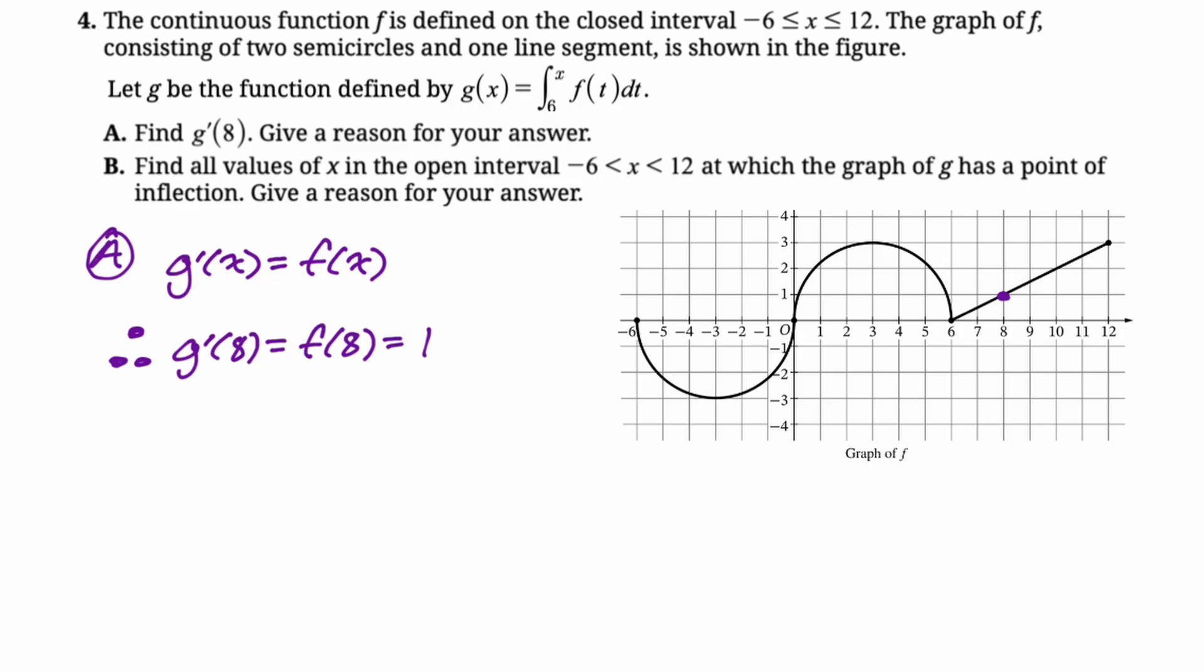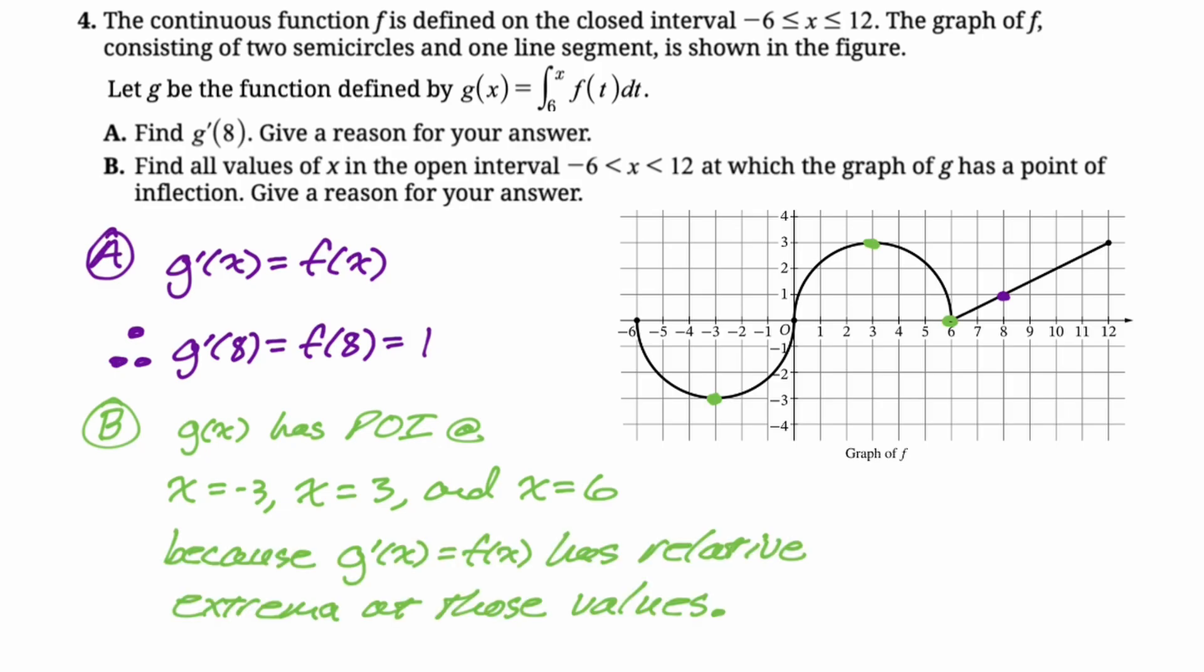So this is my favorite thing to do with these graphs. We are going to have points of inflection at all the relative extrema of the graph of the derivative. So first I'm going to say that these are definitely the points of inflection of g. I now just need to justify that. So g of x has points of inflection at x equals negative 3, x equals 3, and x equals 6. Now we need to give a reason. So I'm going to say because g prime, which is f of x, has relative extrema at those values.